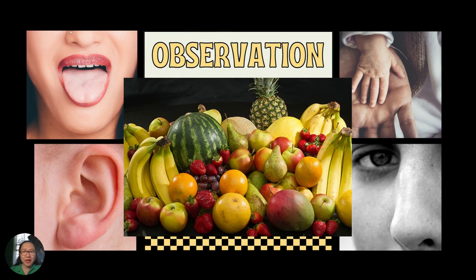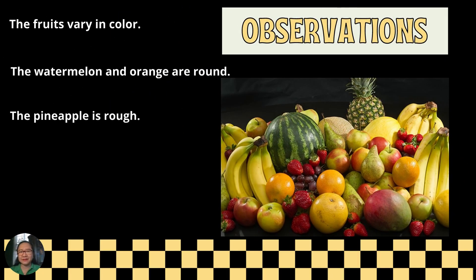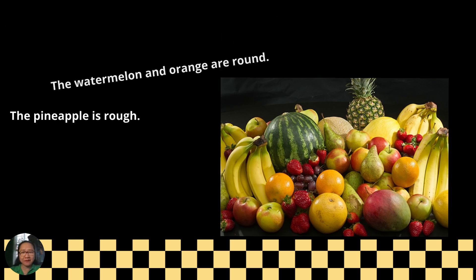Now look at the pictures of fruits. Can you make an observation about them? You can say the fruits vary in color, the watermelon and orange are round, and the pineapple is also round.